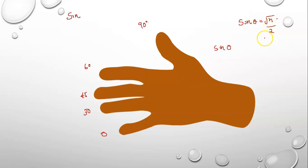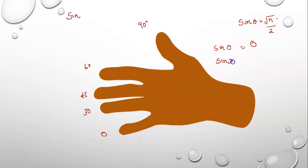Fingers below. Let's add 0. This value is 1, then my value is 0. Sign 30 — sign 30 is this value. This value is 1. Let's add 1 value. This value is root 1 by 2.